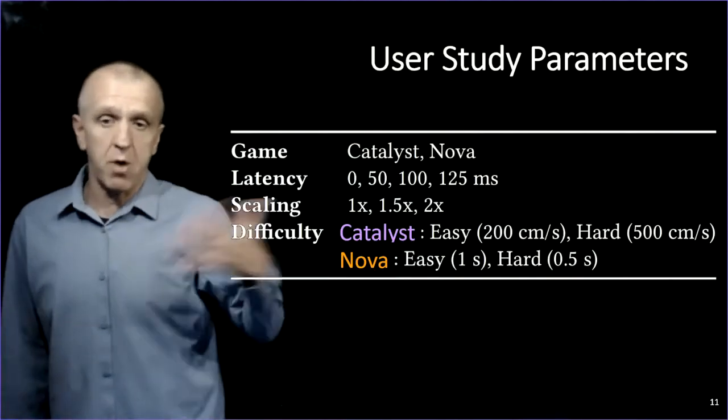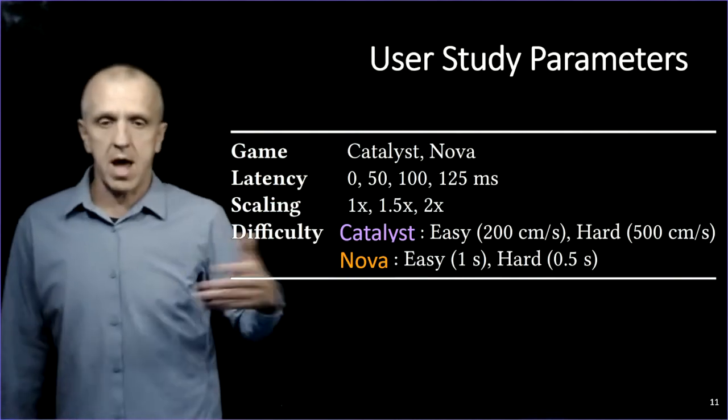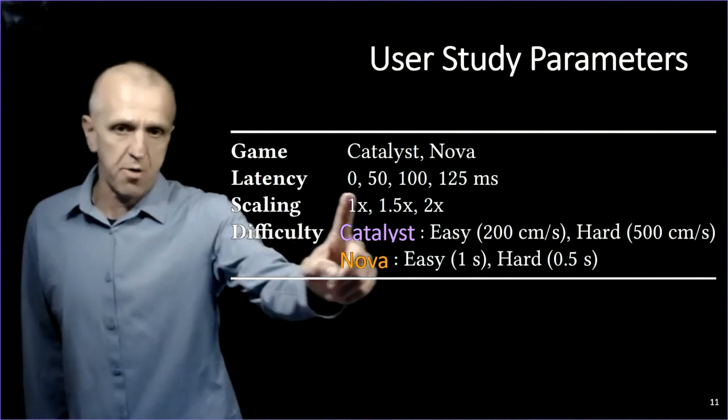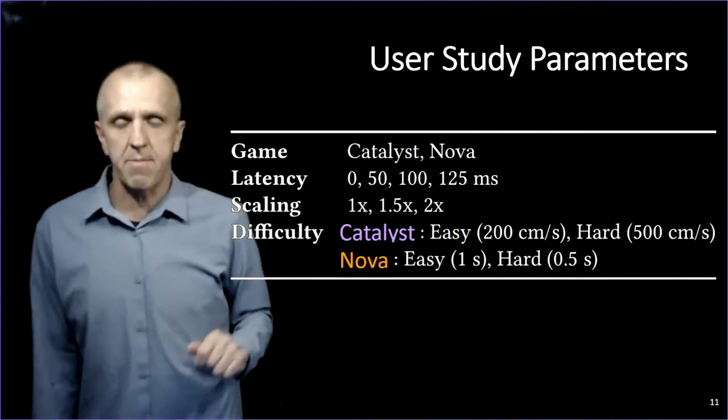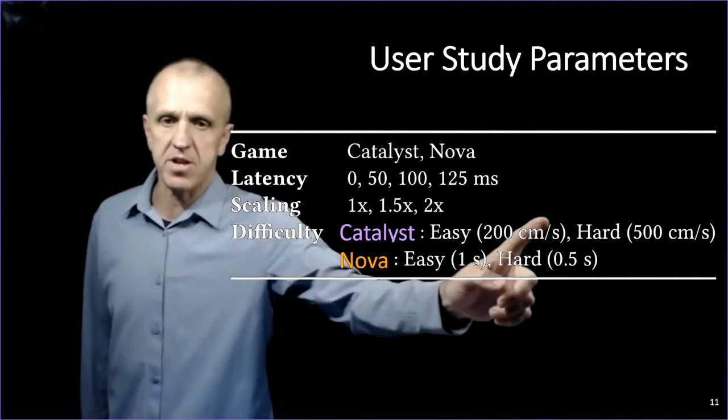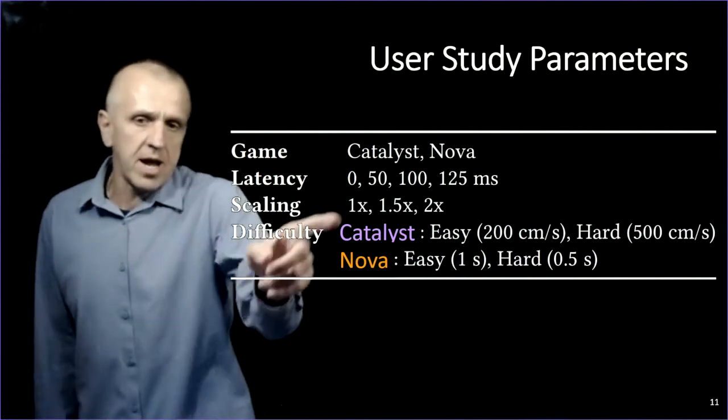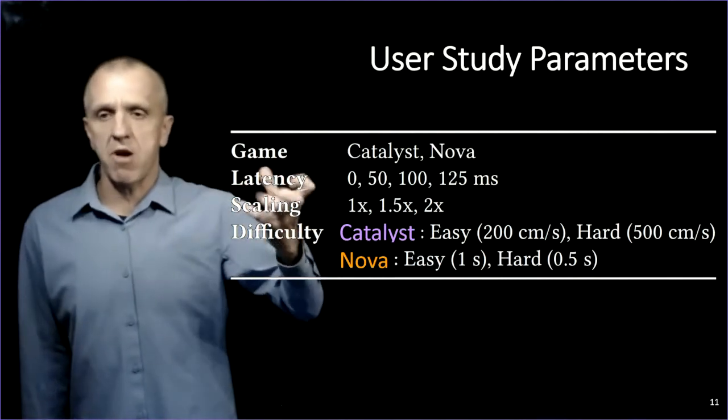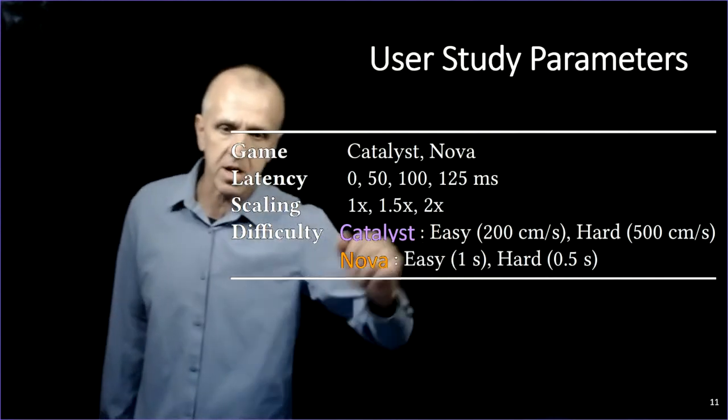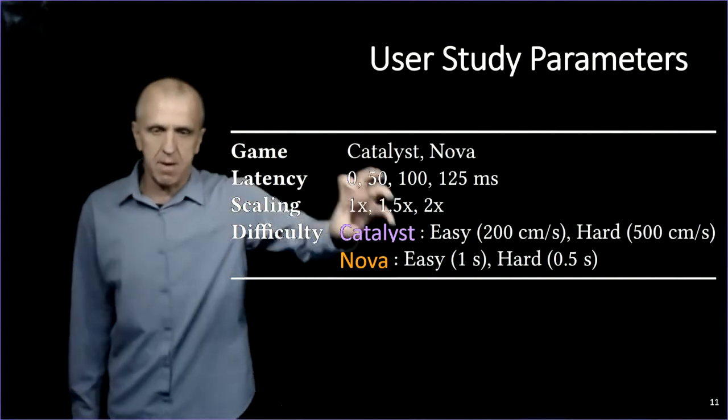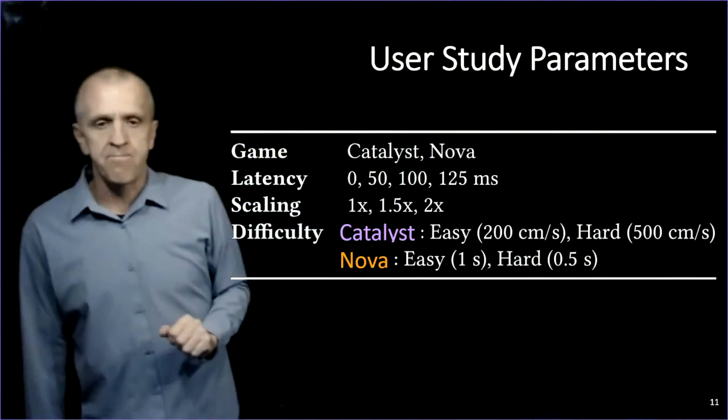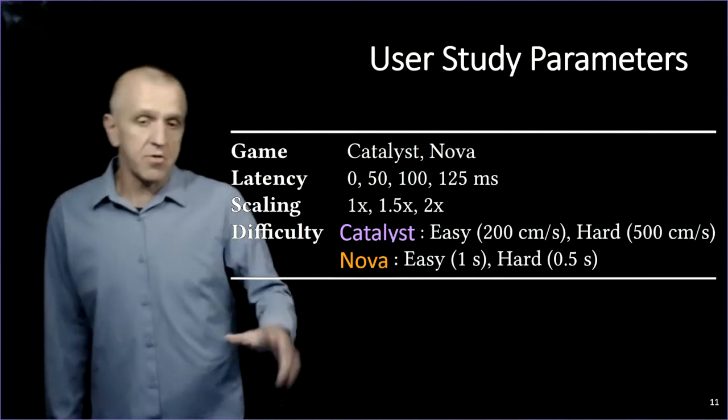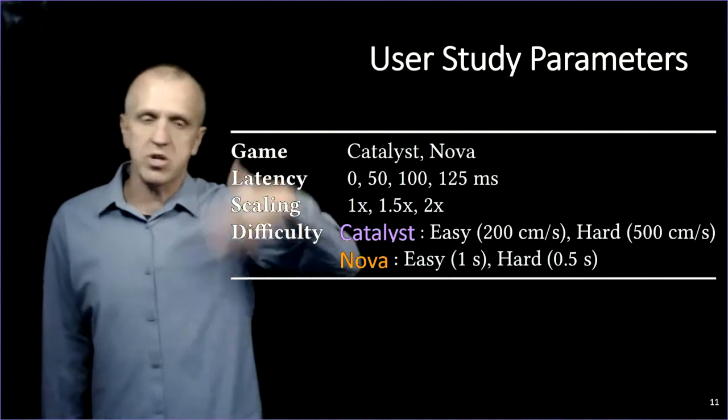So our approach is a user study where we're going to vary a whole bunch of parameters and we're going to see how users do. Can we control things, does this technique work or these two scaling techniques in these two games? So we're going to vary latencies, of course. So we have four different latencies we're going to look at from no latency, kind of local system, to 125 milliseconds. That's kind of the upper end of what most cloud game providers are looking for. We'll look at different scaling values. So there's one sort of standard up to twice as big. We'll look at difficulty. So if you make the game easy versus hard for Catalyst, that has to do with how fast the opponents are moving. We're looking at Nova, we're talking about how many beats are spawning per second.